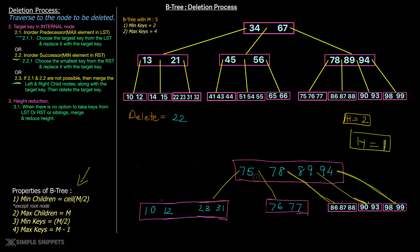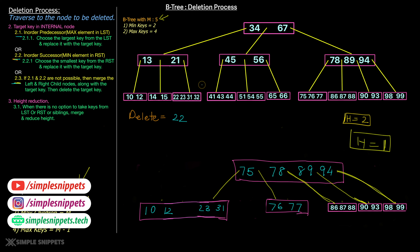We've covered all the different use cases for deleting a key in a B-tree. If you have any confusion, go back in the video, pause, and note down these steps. Try multiple deletion processes with different m values — m=3, 4, 5, 6 — to get a better understanding of how the structure changes. That's a wrap for this video. If you enjoyed it, give it a thumbs up and share it with your friends. See you in the next one.